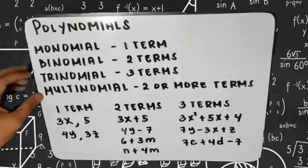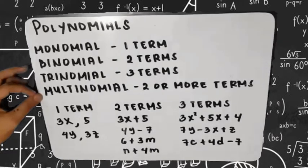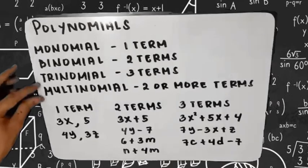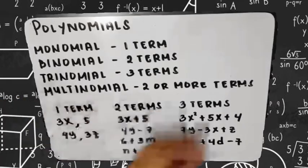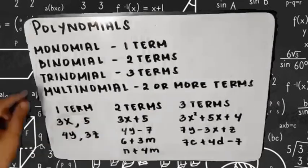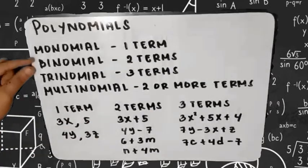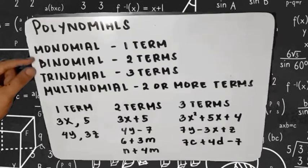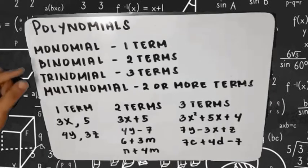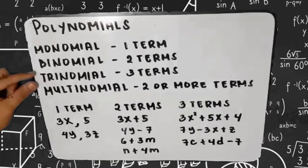But if we say multinomial, that is 2 or more terms. So it means we can say that a binomial is also a multinomial and a trinomial is also a multinomial.